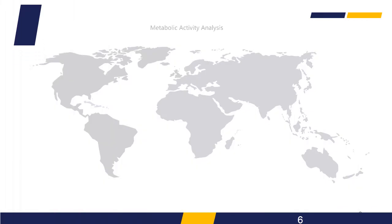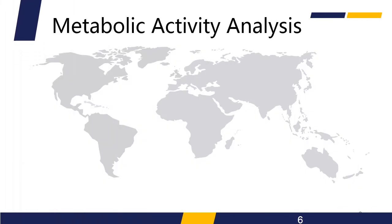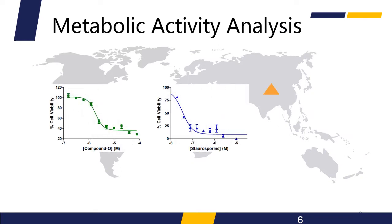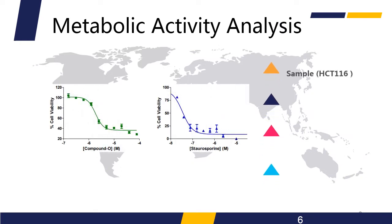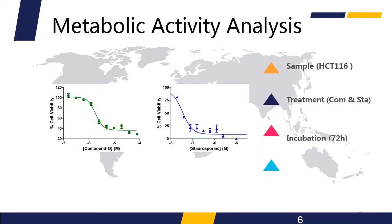Below is an example. HCT-116 cells, a human colorectal carcinoma cell line, were treated with compound O and staurosporine for 72 hours, and the cell proliferation was measured by MTT assay.